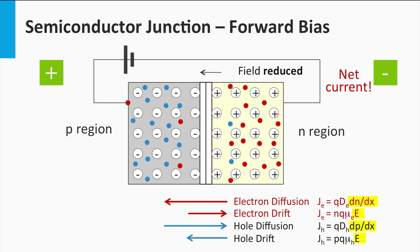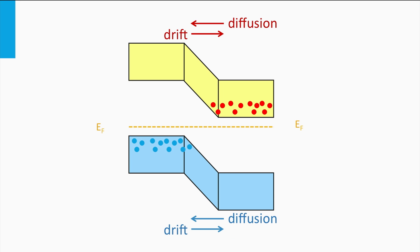This means that by applying a forward bias over a p-n junction in the dark, we produce a net current through the electrical circuit. The contacts and wires of an electrical circuit consist of highly conductive metals. In metals, the charge carriers are free mobile electrons. This means that the electrons move through the electrical circuit from the p-side to the n-side, and at the n-side, electrons are injected into the n-region again.